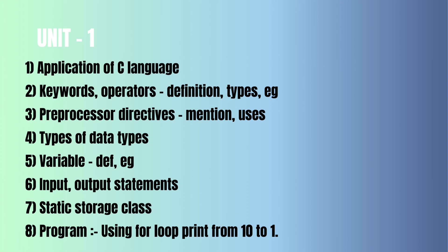You can use users in C language. That is the types of data types. That is the variable definition with its example. That is the input and output statement including with example. You can see some examples in this definition. That is also useful — that is the static storage class. In this unit, you can use a for loop to count 10 to 1. So that is the 8th question.